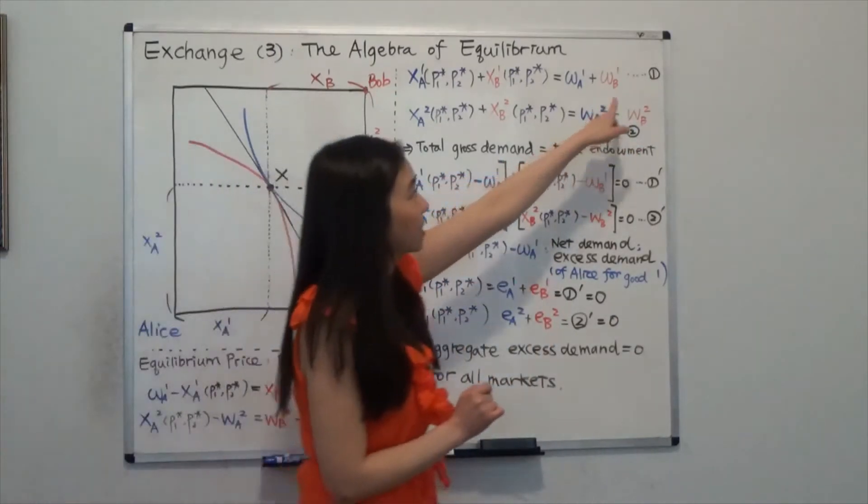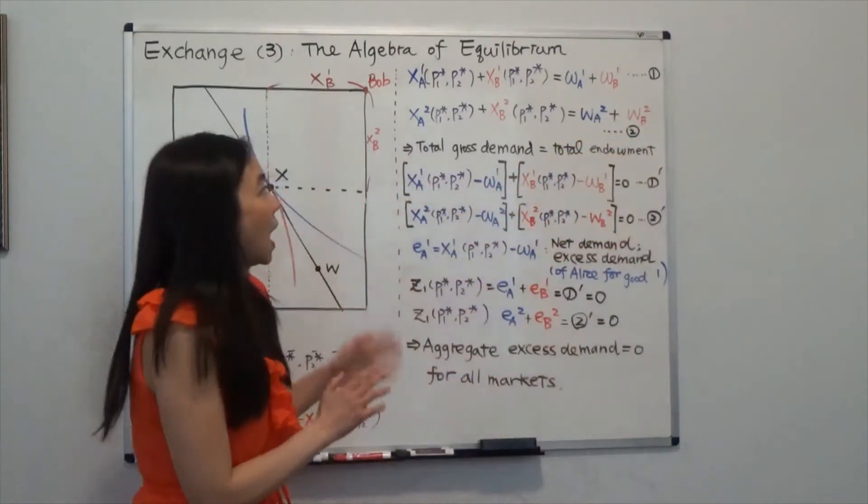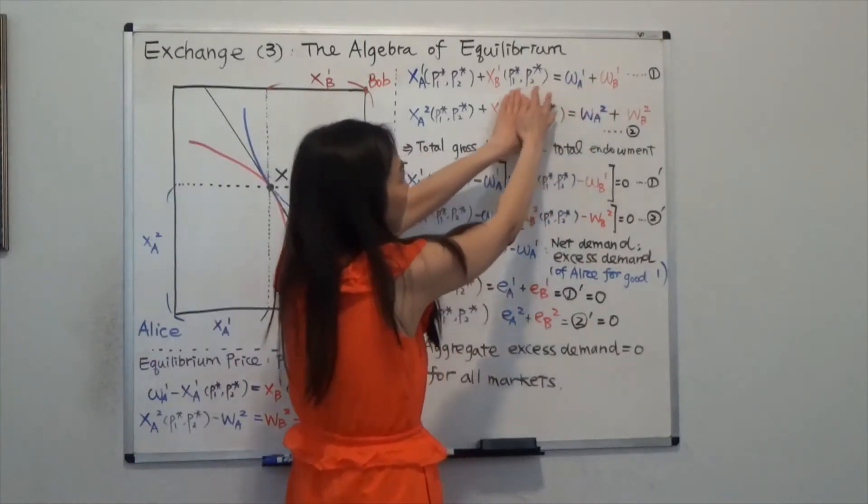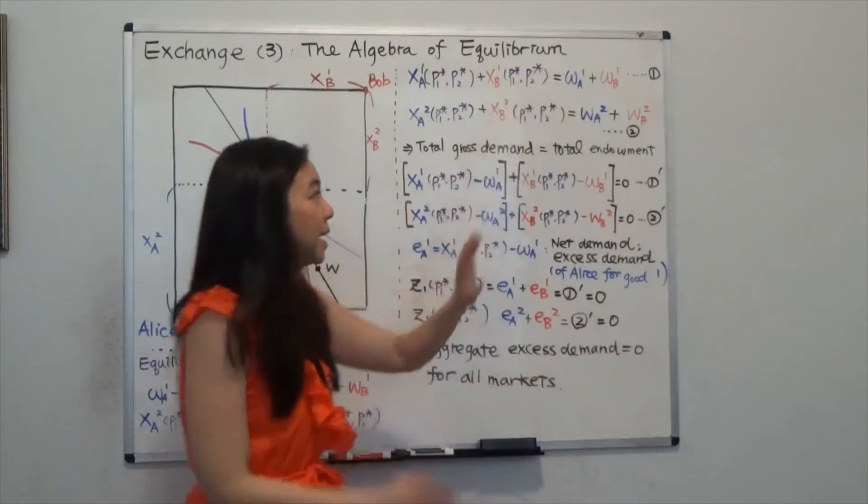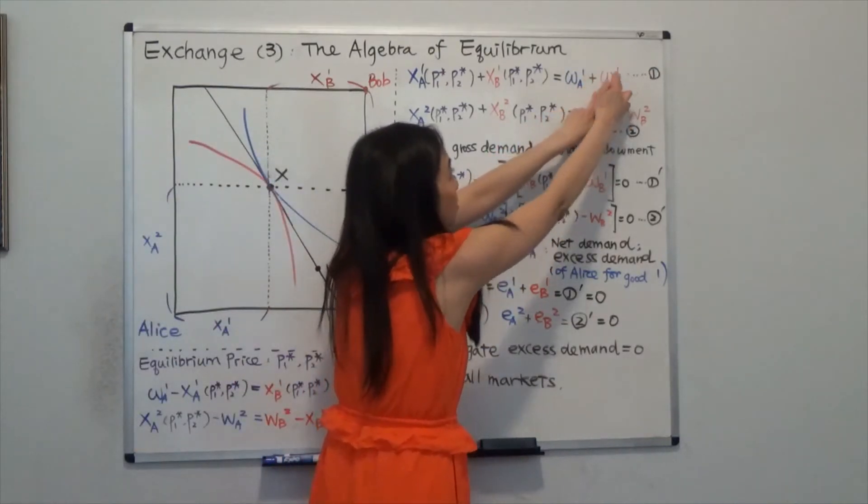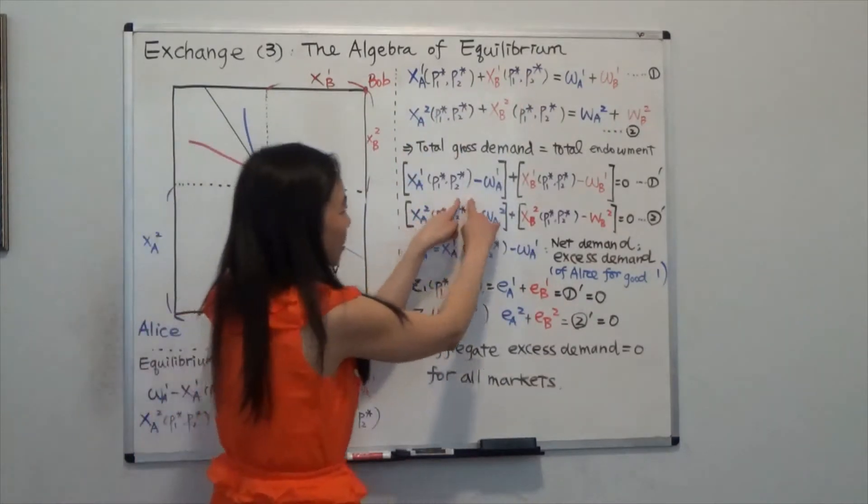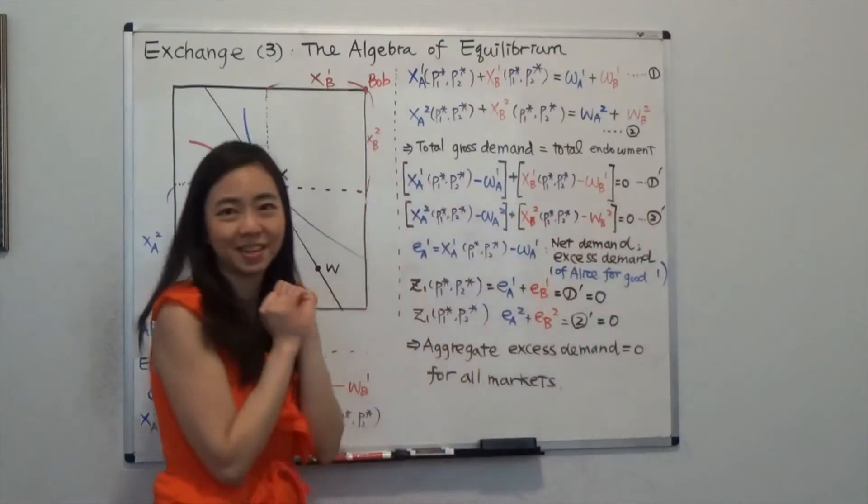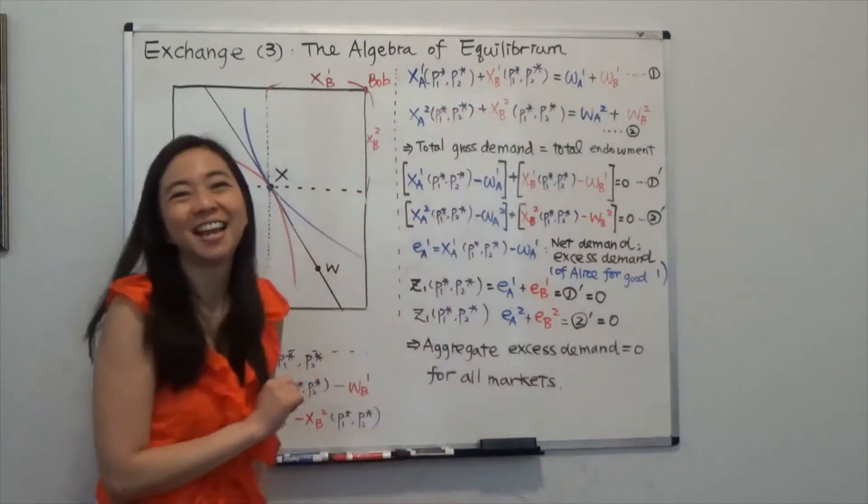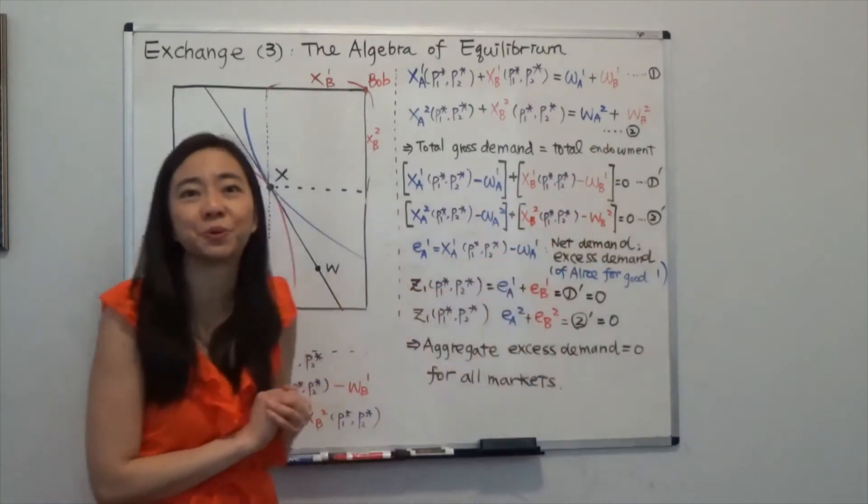And I'm going to call that equation one. I'm going to call that equation two. Now I'm going to move everything from the right hand side to the left in equation one. So I'm not changing anything. I'm just moving omega A1, omega B1 to the left hand side of the equation. So you get equation one prime after I move these two terms to the left. And I'm going to do the same thing for equation two. And I'm going to call that equation two prime.